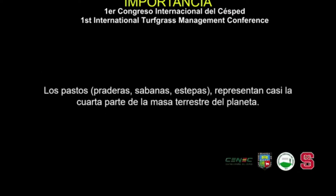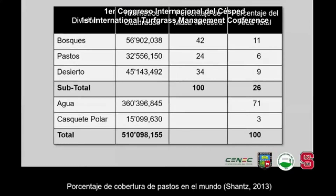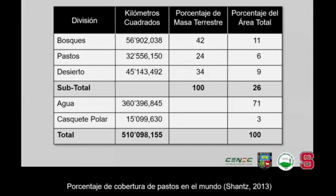Los pastos representan casi la cuarta parte de la masa terrestre del planeta y están distribuidos en praderas, sabanas y estepas. El 24% de la masa terrestre está representada por pastos, un 42% por bosques y un 34% de desiertos, lo que ocupa el 100% de toda la masa terrestre. Dentro del planeta, la masa terrestre representa solamente el 6% frente al 71% que significa el agua y el 3% los polos.